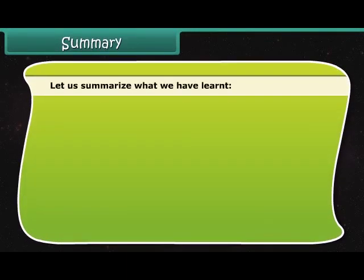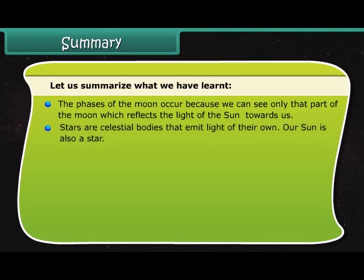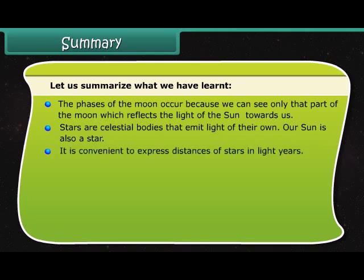Let us summarize what we have learned. The phases of the moon occur because we can see only that part of the moon which reflects the light of the sun towards us. Stars are celestial bodies that emit light of their own. Our sun is also a star. It is convenient to express distances of stars in light years.